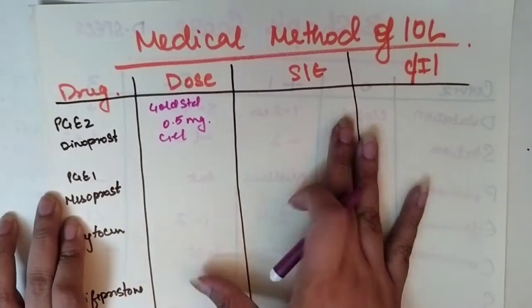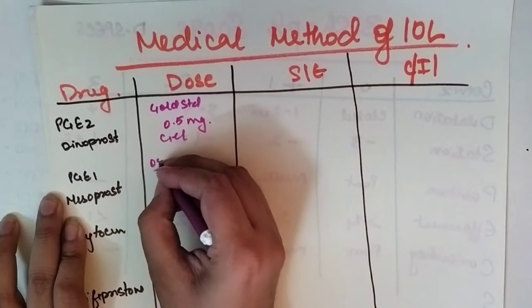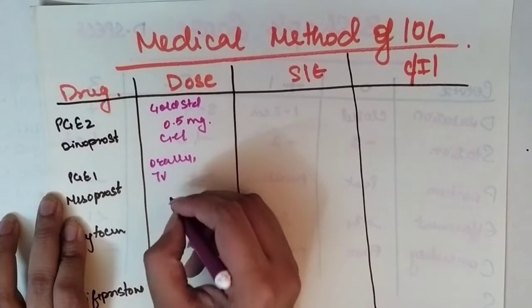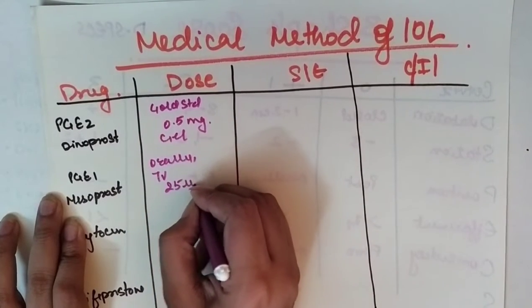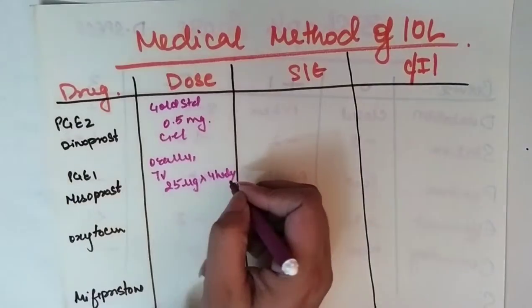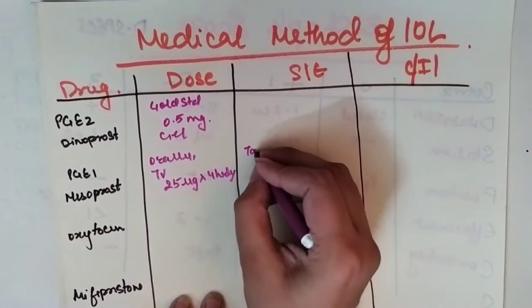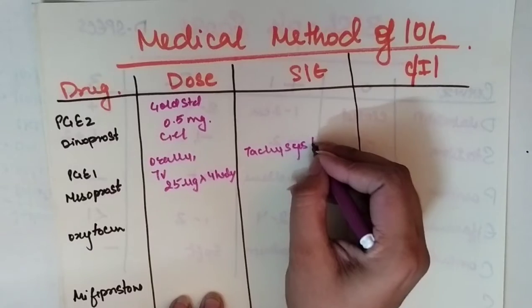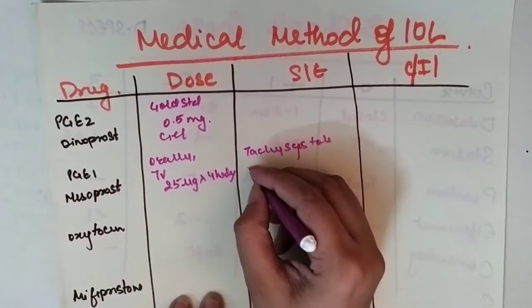PGE1, we use orally or transvaginally, 25 micrograms. Side effects can be tachysystole, meconium passage, there can be uterine rupture.